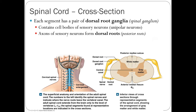The dorsal root ganglion contains the cell bodies of sensory neurons — the unipolar neurons from chapter 12. The cell body is in the dorsal root ganglion, with axons extending into the dorsal root and dendrites reaching into the periphery of the body. The axons of these sensory neurons form the dorsal root, also called the posterior root.